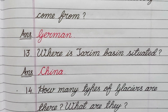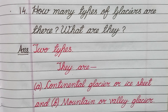Question number thirteen: Where is a rim basin situated? Answer: Sahara. Question number fourteen: How many types of glaciers are there, and what are they? Answer: Two types — they are continental glacier or ice sheet, and mountain or valley glacier.